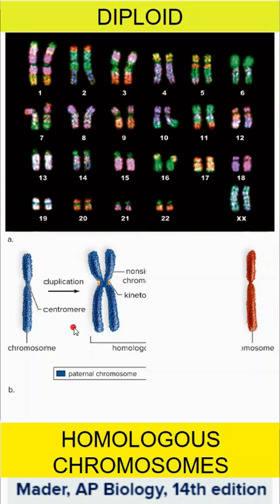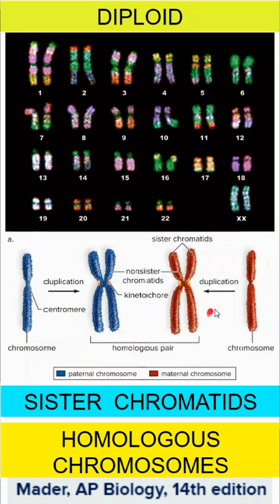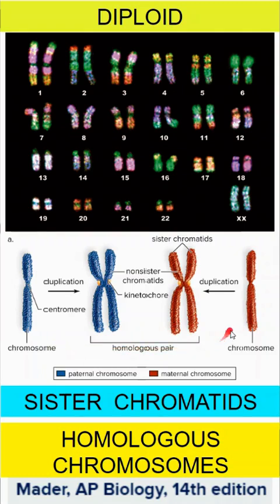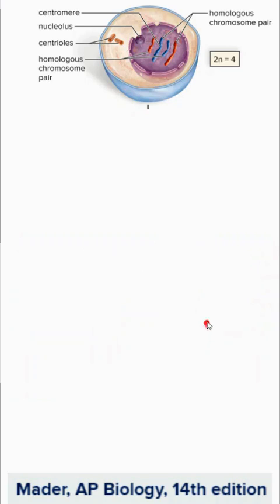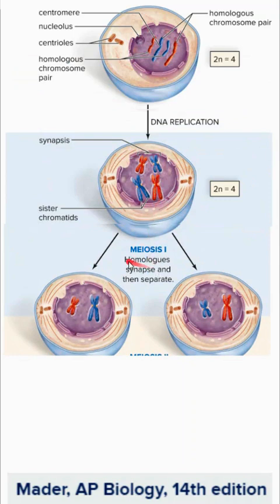Before division — whether mitosis or meiosis — we first have to create sister chromatids through replication. You make an exact copy of the chromosome from your father and an exact copy from your mother. Homologous pairs are what we have from mom and dad, while sister chromatids are the replicated identical copies. DNA replication must occur before cell division.